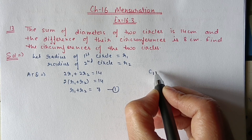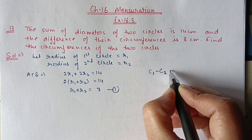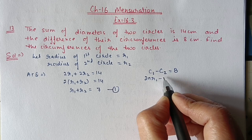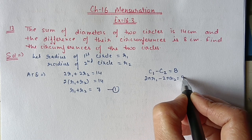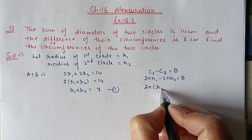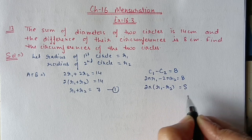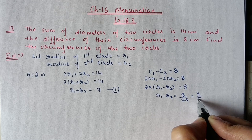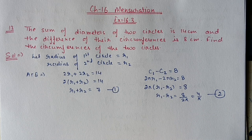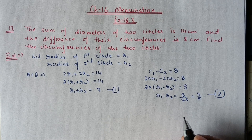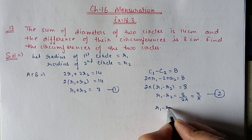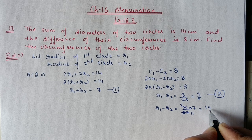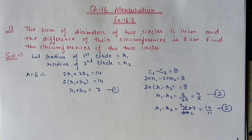Second, the difference of their circumferences: C1 − C2 = 8, which gives 2πr1 − 2πr2 = 8. Taking 2π common: r1 − r2 = 8 upon 2π = 4 upon π. Substituting π = 22/7, we get r1 − r2 = 4 upon (22/7) = 14 upon 11. This is our second equation.